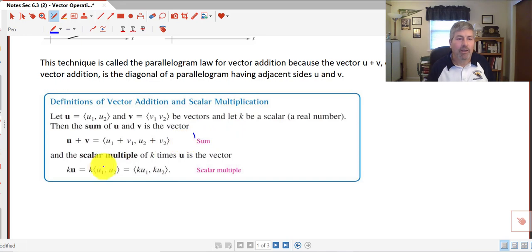And scalar, similar to distribution, we take our scalar and multiply it by the first coordinate, then we multiply it by the second coordinate.